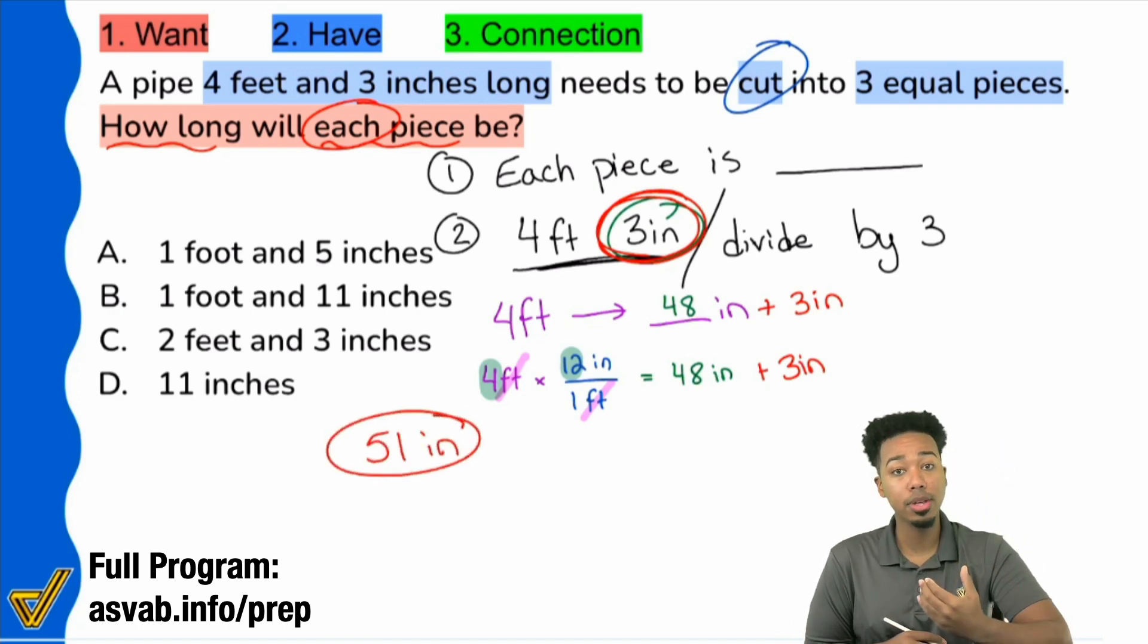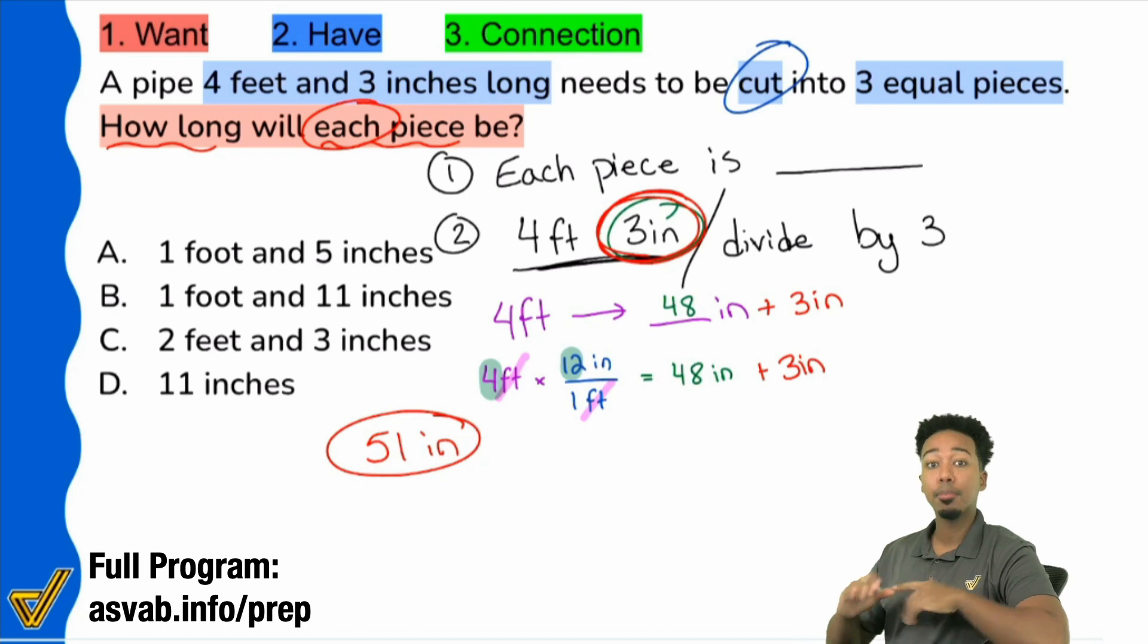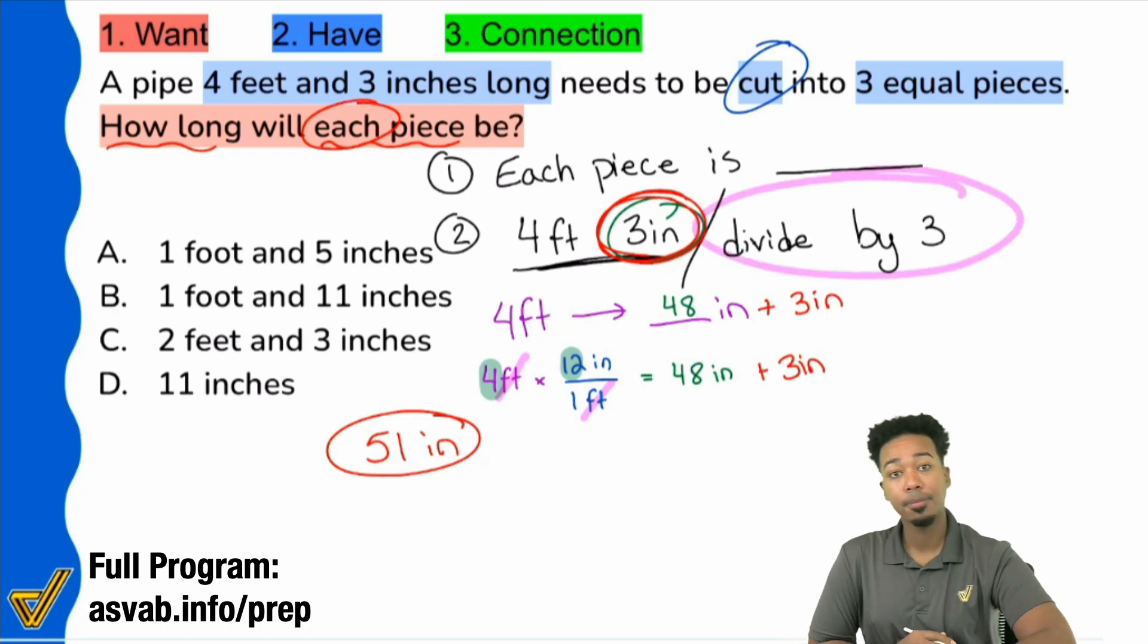So remember the goal here, don't forget the goal. All we did here was convert the four feet, three inches into just inches. But the overall goal was to always divide by three. So now we have the 51 inches. Let's divide by the three to find out how much each piece is of that pipe.